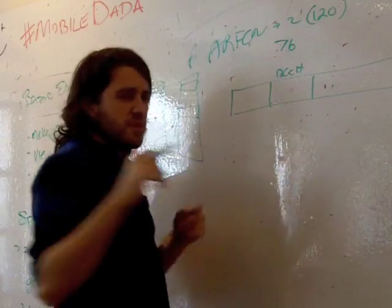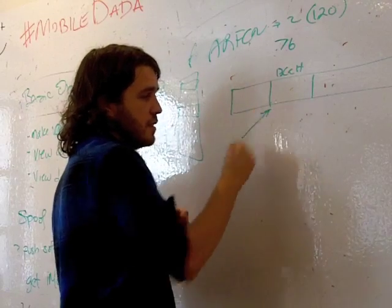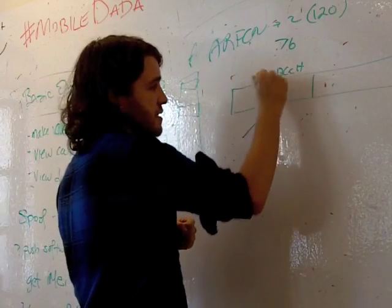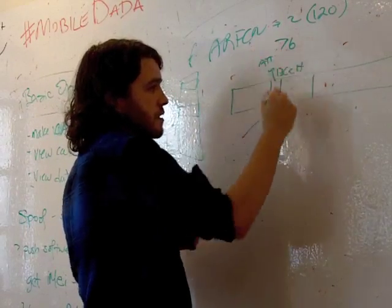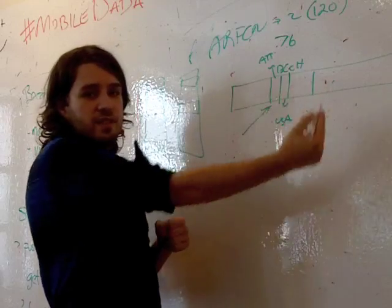And so when your phone camps to a station, all it does is listen to this slot and determines that, hey, this is the guy that I want to be. Maybe it says there's a bit that says AT&T, there's a bit that says USA. There's a bunch of these little codes.